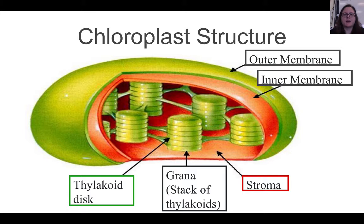This is a diagram of the structure of a chloroplast. Notice that it's surrounded by two membranes — an inner membrane and an outer membrane. Inside of the chloroplasts there are thylakoid discs, and they stack up to form what's called a grana. Surrounding the grana is something called the stroma, which is basically the space between all of the thylakoid discs.